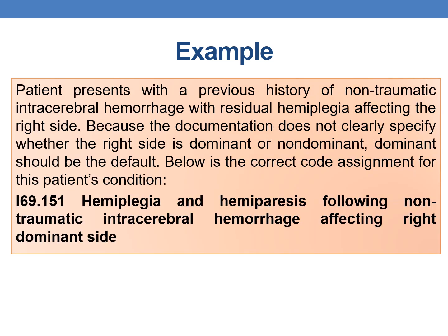Let us see one more example. A patient presents with a previous history of non-traumatic intracerebral hemorrhage with residual hemiplegia affecting the right side. Because the documentation does not clearly specify whether the right side is dominant or non-dominant, by default you code dominant. The correct code for this scenario is I69.151 — hemiplegia and hemiparesis following non-traumatic intracerebral hemorrhage affecting right dominant side.